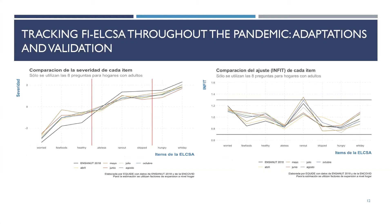Since then, we've been doing Rasch modeling for every cross section and comparing it to the 2018 data — which is the gold standard for a nationally representative survey. What we've seen is that the telephone survey is quite valid and reliable. We can see that through severity scores per item and the infit values per item. There is one month in which we had a problem with the infit value — I think it was May — but the more we trained interviewers, the better these questions were performing. We've been doing this Rasch modeling constantly to make sure that our tracking system is consistent and has robust psychometric properties.